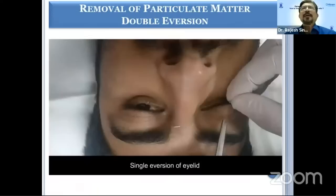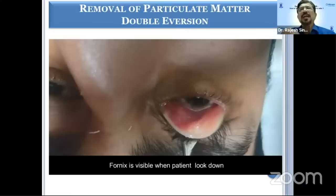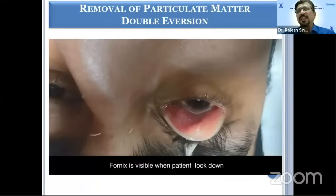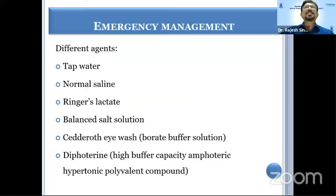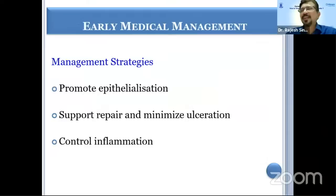One should definitely try to do double eversion of lids. Sometimes the chemical goes into the fornices and gets stuck there. Double eversion of lids should be done, and the patient should be asked to look down so that the fornices can be seen and one can remove the particulate matter from that area.